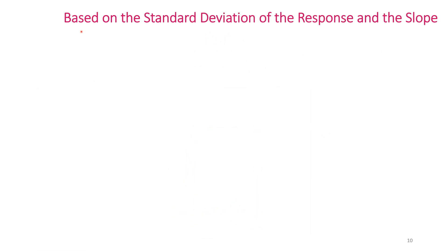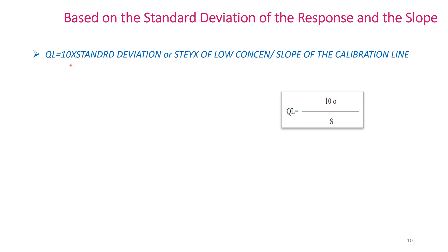QL calculation based on standard deviation of the response and the slope: QL = 10 × σ (or STEYX, the standard error of low concentration) ÷ S (slope of the calibration curve). That is, QL = 10 × σ ÷ S.